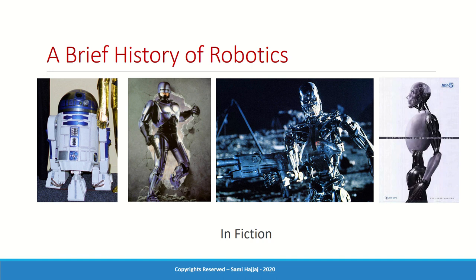In fiction, I'm sure you're familiar with R2-D2, RoboCop, the Terminator, and iRobot. You cannot see any of these robots in real life — with the exception maybe of R2-D2 — because these are all concepts or theory. The concept of robots attacking or killing us is still only in movies. The AI or thinking process is not yet that developed.